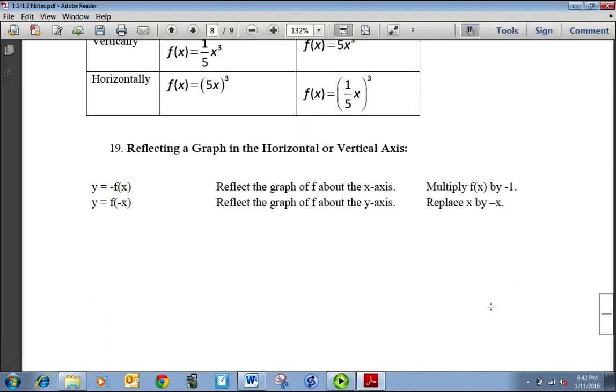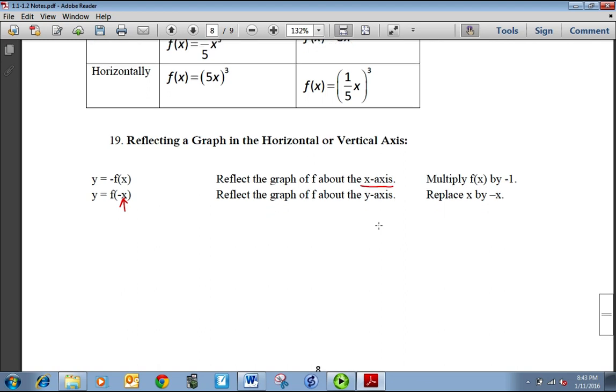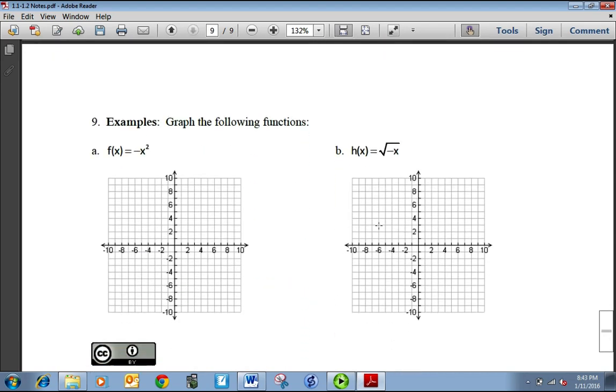And then another thing we can do with transformations is reflect. And that's good to know. Now, if you have the negative on the left of the function, on the outside of the function, then it's reflected about the x-axis. In other words, it's flipped down. If the negative is on the inside, then it's flipped around the y-axis. So for example, negative x squared is just the parabola flipped upside down. And the square root of negative x, now the square root of x usually goes like this. This is square root of x. With the negative on the inside, it's being flipped over the y-axis. So we get square root of negative x here. So that's how that works.